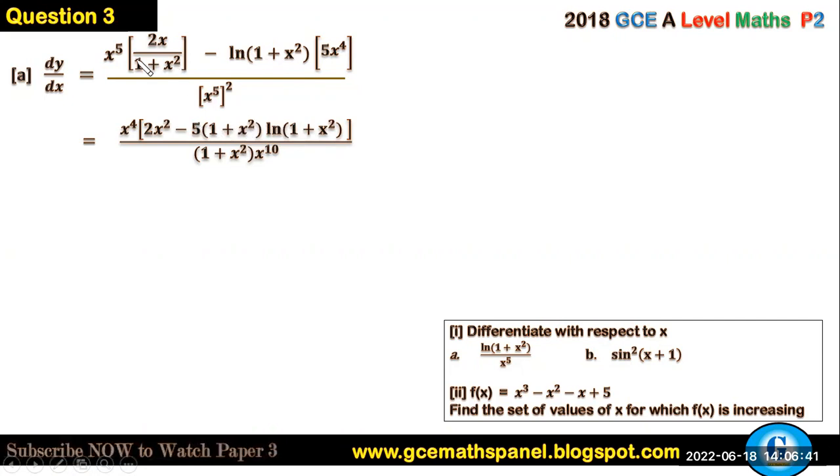All this on the denominator, so with the denominator as well, we are multiplying by 1 + x² and this is what we obtain. So x⁴ can cancel out what we have in the denominator, and this will give us [2x² - 5(1 + x²)ln(1 + x²)] all this on (1 + x²)x⁶.